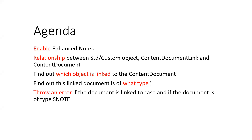Moreover, like I told you, notes is nothing but a content document. So how is a content document related to a standard or custom object? That is something we are going to see. Then dynamically finding out that the object which is related to the content document is of what S object type, or which object is it? What is the file type of the document that is connected to the object dynamically again?